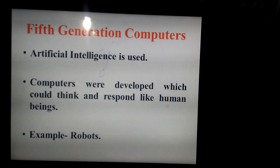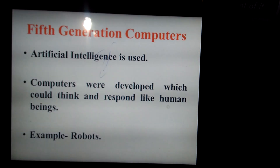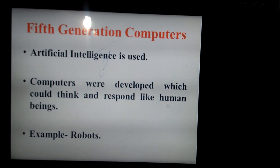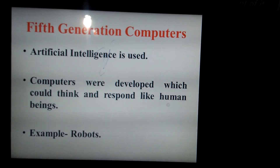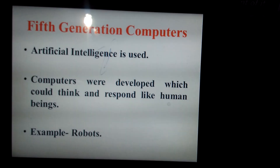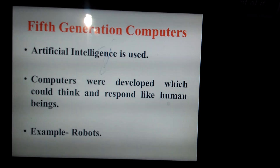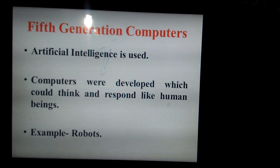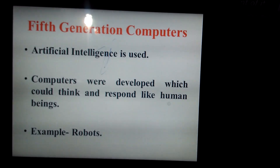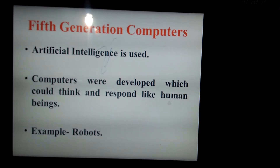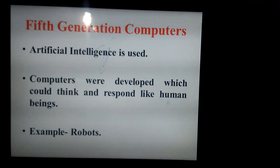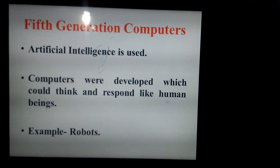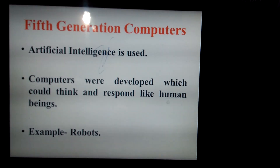In the fifth generation of computers, artificial intelligence is used. Artificial intelligence means a brain developed in the laboratory — the computer can now think, understand, and answer your questions by itself. For example, if you tell a computer to make tea, it can act on that command. In foreign countries, robots using artificial intelligence are given such commands.